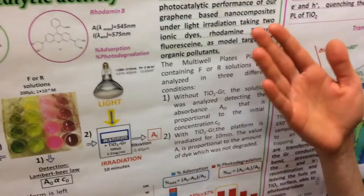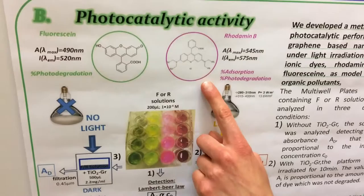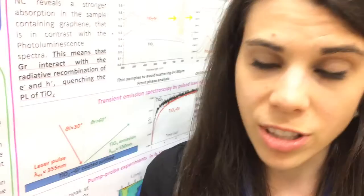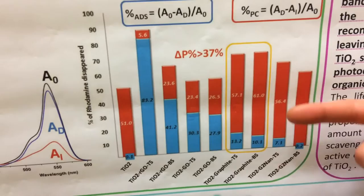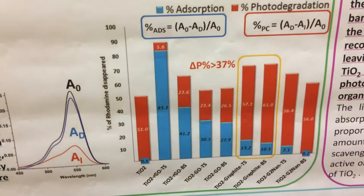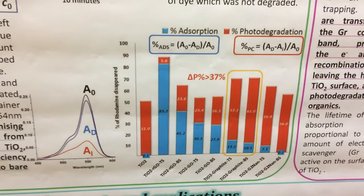We tested the performance of the photocatalyst with two molecules, fluorescein and rhodamine, which can mimic the behavior of organics in the environment. We performed this test using a UV irradiation lamp and measuring the rate of the dye remaining in the solution. We found that the most promising composite was obtained by direct sonication of titanium dioxide and graphite, with performance enhanced by approximately 40 percent. We also observed adsorption of dye on top of the catalyst.